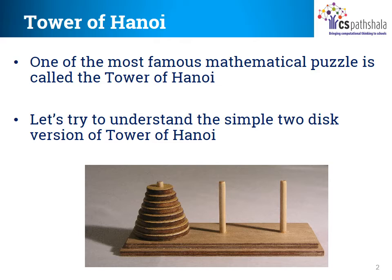The first example is of Tower of Hanoi. Tower of Hanoi is one of the most famous mathematical puzzles. You can see in this picture it has 3 poles and a few round discs of different sizes. Let's try to understand a simple version of this Tower of Hanoi puzzle using 2 discs.